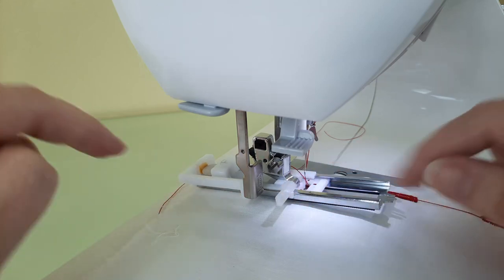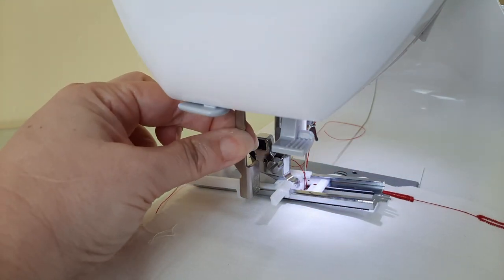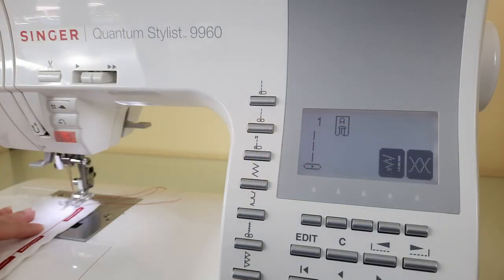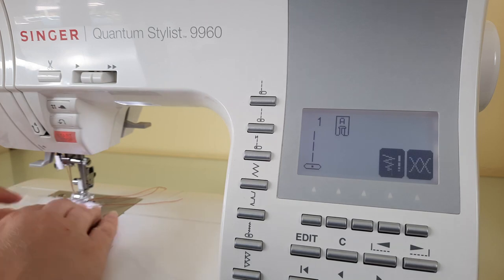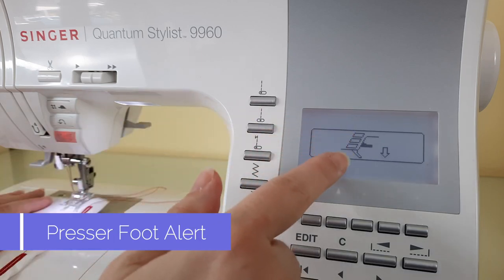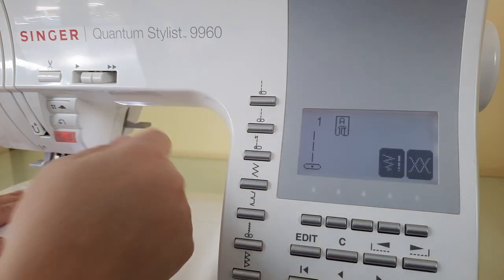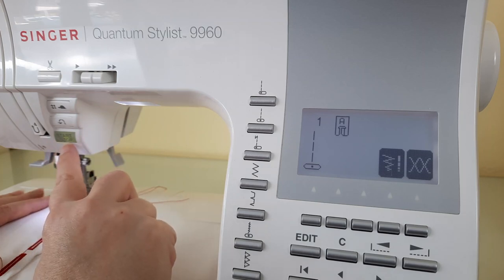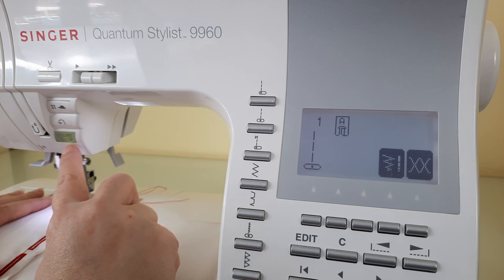Here's another very common warning: if you forget to put your presser foot down when you're beginning to sew, this is showing you that you forgot to put your presser foot down. This also was showing in red and it should be in green when the machine is ready to start sewing.